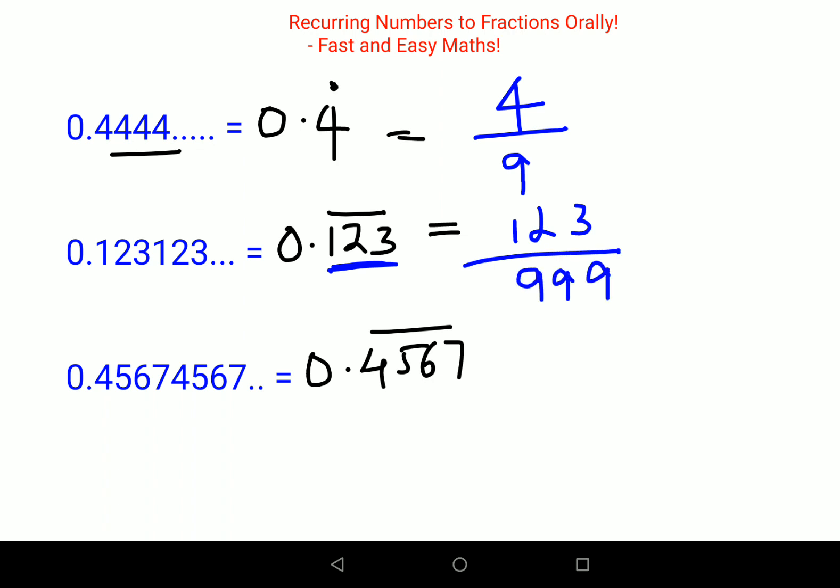Why 3 times 9? Because there were 3 digits after the decimal point which were getting repeated. If you look closely, this can also get reduced further, so this will get 41 upon 333.